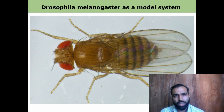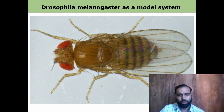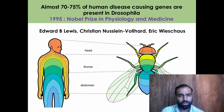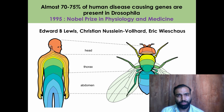We use Drosophila melanogaster as a model system to study various aspects of developmental biology. Why? One of the important reasons is that 70 to 75 percent of human disease-causing genes are present in Drosophila. So if you wanted to study human disease, it is possible to do it in Drosophila. You cannot work on humans because of regulatory aspects, and what is also important is that the broader development of both insects and humans is controlled by similar genes. For example, formation of head, thorax, and abdomen is controlled by the same set of genes in Drosophila and humans.